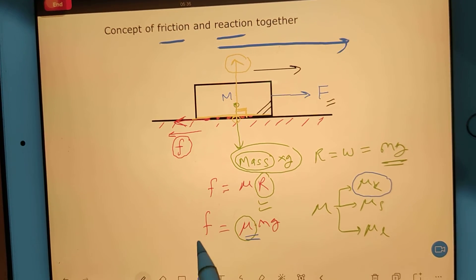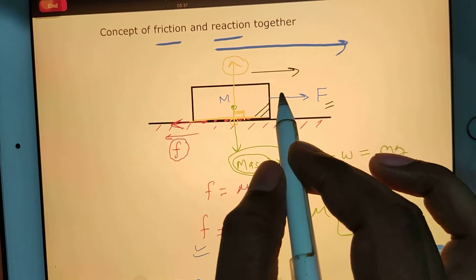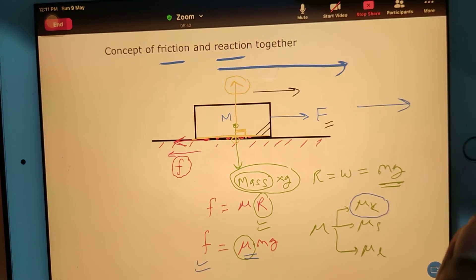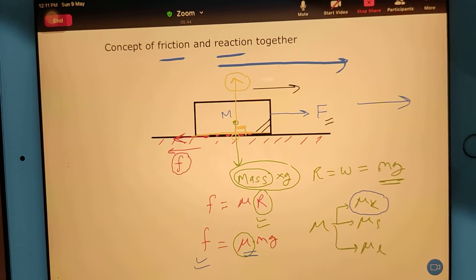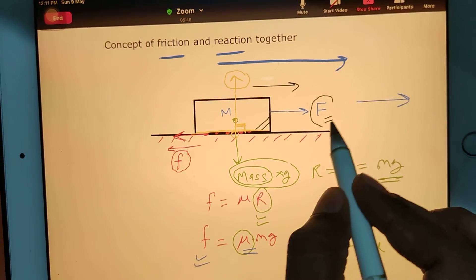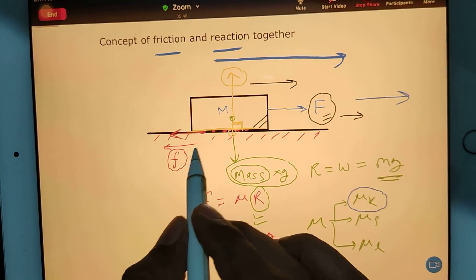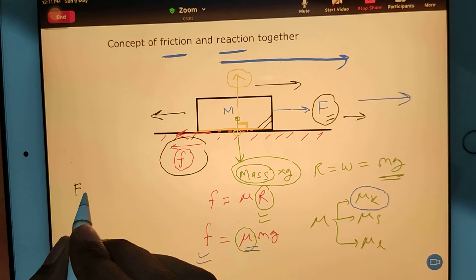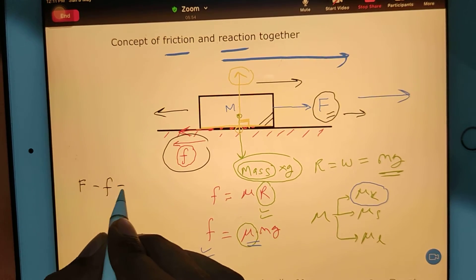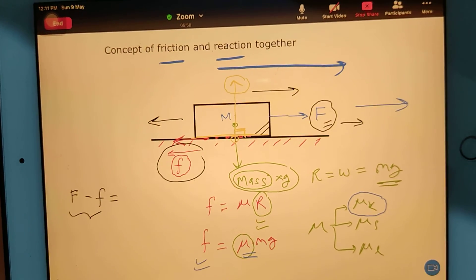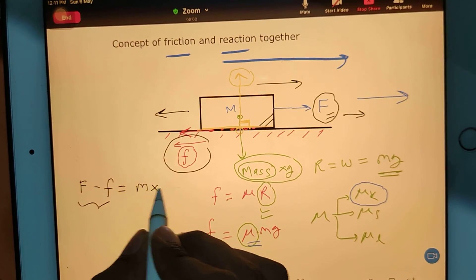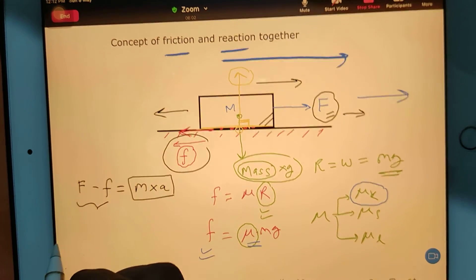So we got our friction force. Now understand the total forces in the direction of motion, parallel or anti-parallel. This force F is acting in this direction and this friction force f is acting in this direction. So the force F minus friction force will give you a resultant force, that is mass of the object into the acceleration of the object.